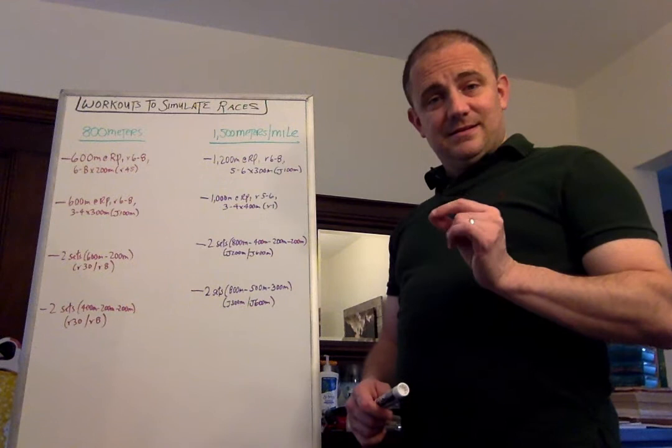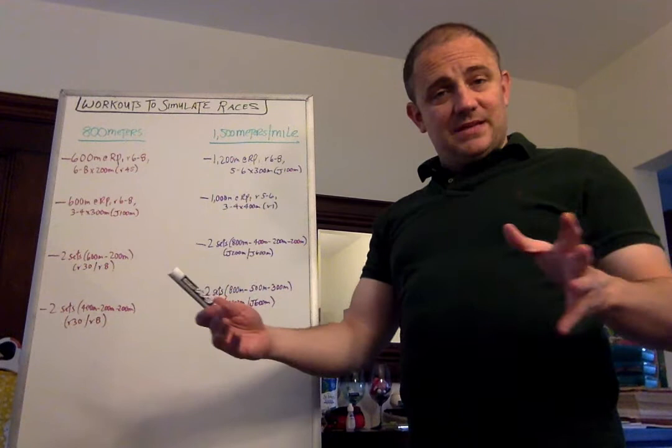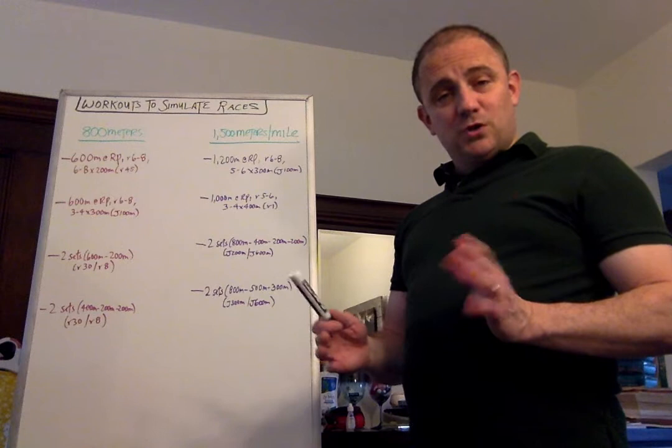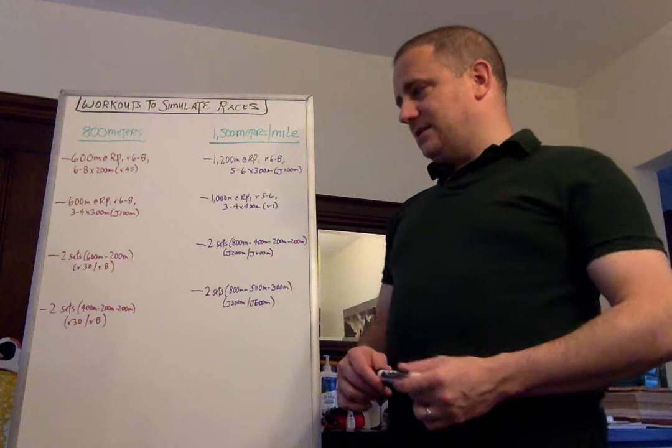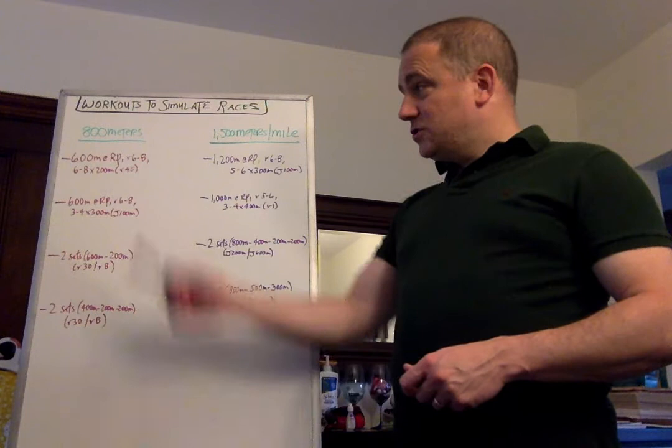Again, it's only two by 800 meter total, but it's a great way of breaking it down to pieces with very short recovery to simulate an 800 meter race. And this is a good idea. It gives you a good idea of fitness and race readiness. All right? So those are four for the 800.